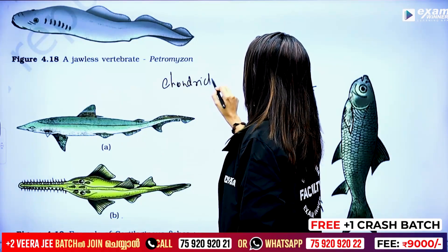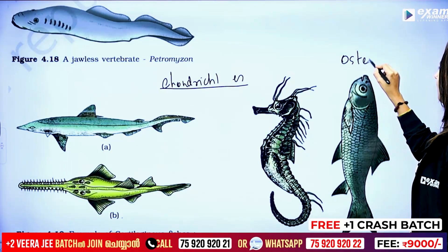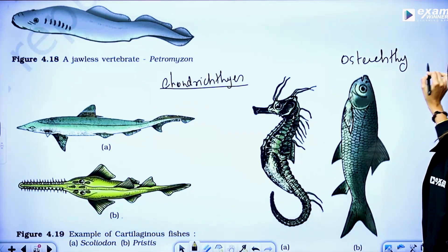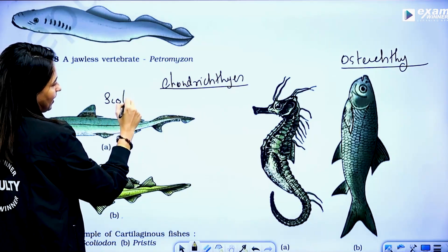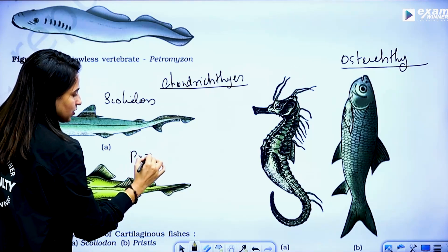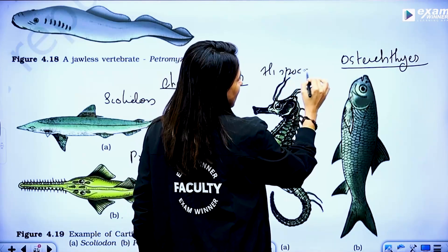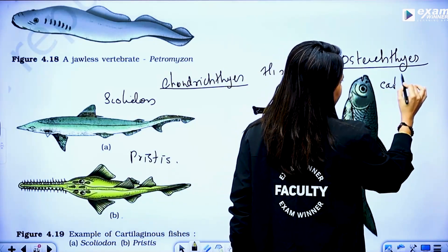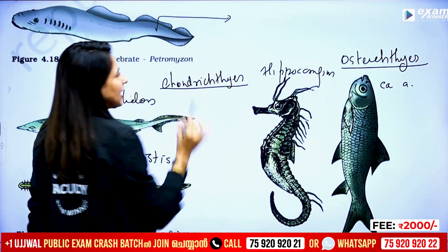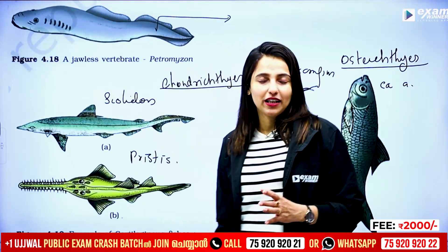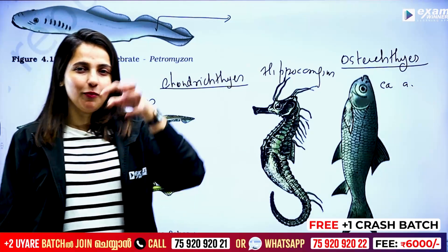Chondrichthyes — cartilaginous fishes. This is a comparison. Then Osteichthyes — bony fishes. We can learn the features. Now, Cyclostomata group — Petromyzon, Osteichthyes reproduction in freshwater. So we have to go and check the next step.